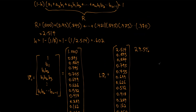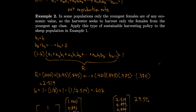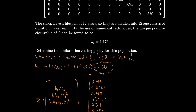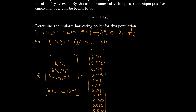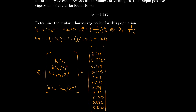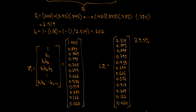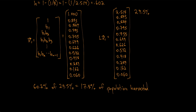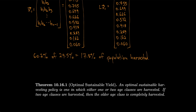Notice this policy sustains the population while harvesting 17.8%, compared to only 15% under the uniform harvesting policy. So harvesting only the youngest age class allows a greater yield. It turns out there is an optimal sustainable harvesting policy, and that optimal policy harvests either one or two age classes. If two age classes are harvested, the older of the two is completely harvested.